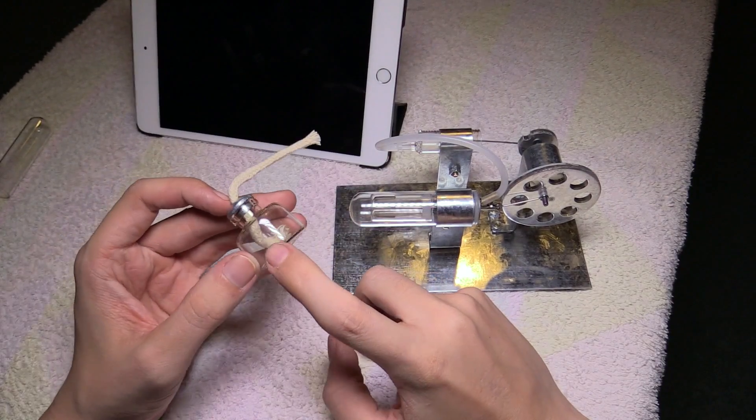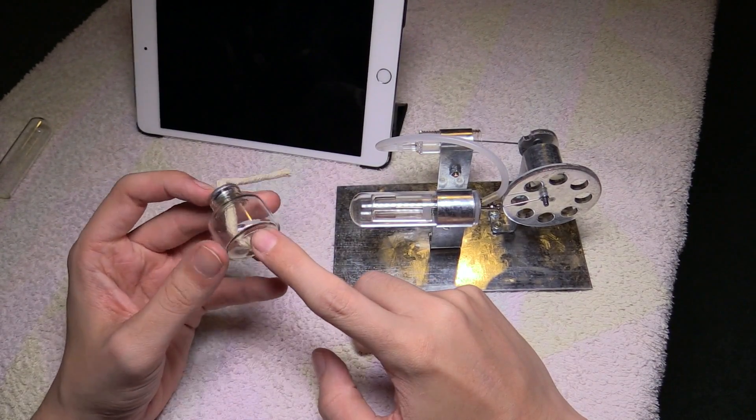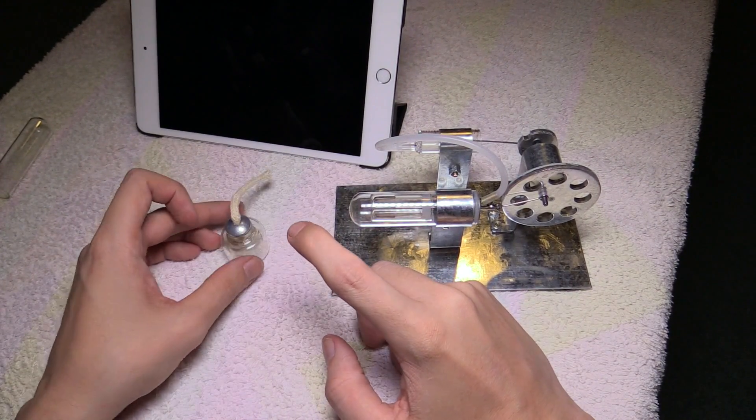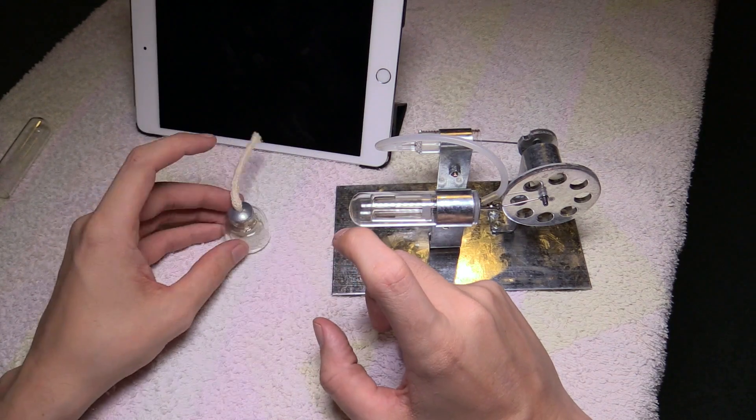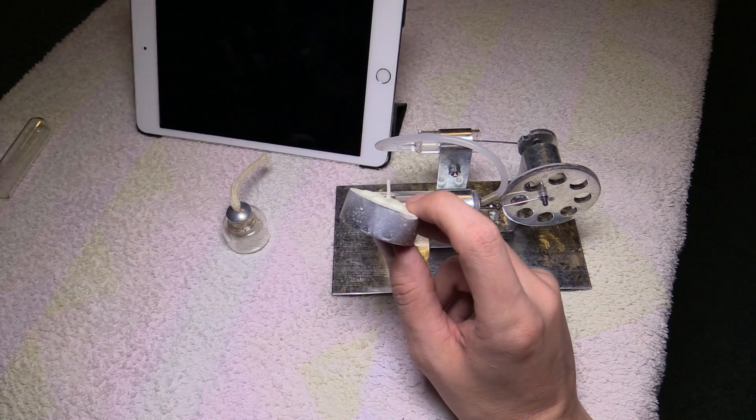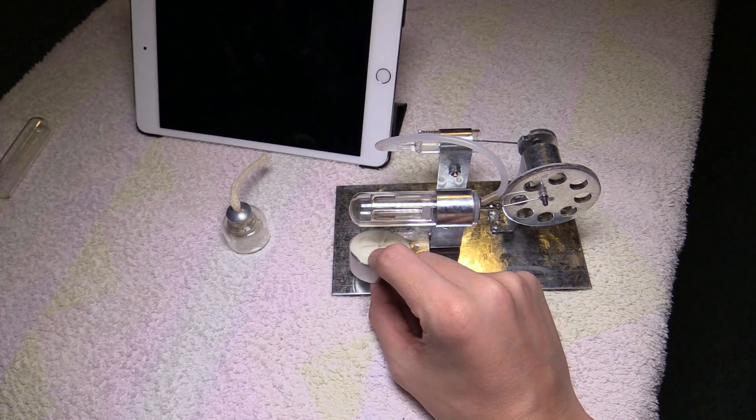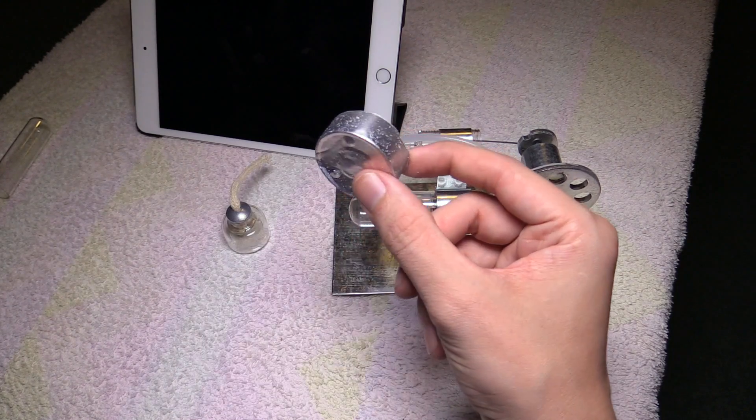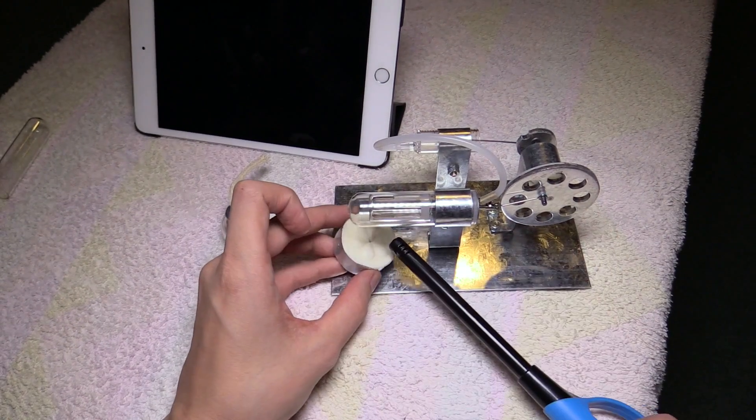Now, I don't have any alcohol or methylated spirits or anything like that to put in this oil burner and I really want to keep it looking new anyway. So, I'm just going to use this candle here. From what I've read in the reviews, it will take longer using a candle like this, but it should work. So, let's go ahead and light the candle.